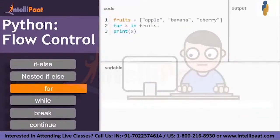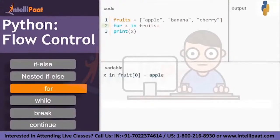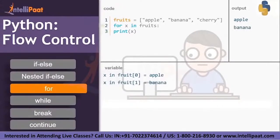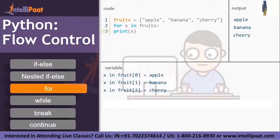Let's understand this in a better way with an example. We have defined a list fruits as apple, banana, and cherry. For x in fruits: x at index zero is apple, then print x — so apple would be printed as the output. Then go back, x at index one is banana, print x — so banana would be printed. Again go back, x at index two is cherry, print x — cherry would be printed. Now if it goes back, there's nothing left in the list, so nothing more would be printed. So you get the final output as apple, banana, and cherry.